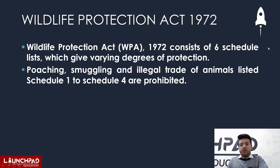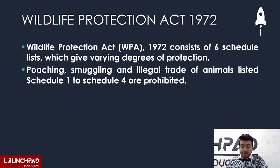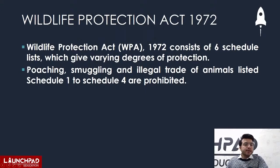The Indian elephant was placed in Schedule 1 of the Wildlife Protection Act 1972, which has 6 schedules. Poaching, smuggling, and illegal trade of animals listed in Schedule 1 to Schedule 4 are prohibited. Animals listed in Schedule 1 and Part 2 of Schedule 2 have absolute protection — if you harm them, you will receive very strict punishment.